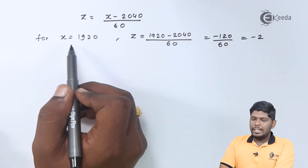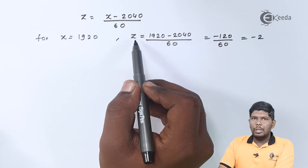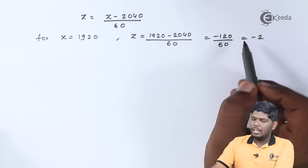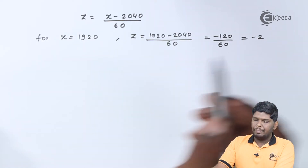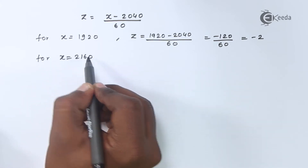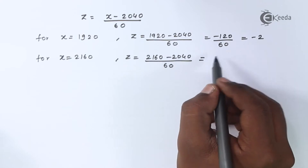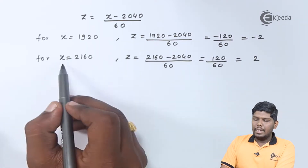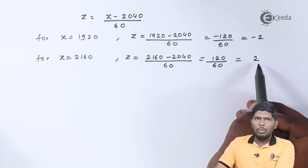If x = 1920 hours, the standardized value z = (1920 − 2040) / 60 = −120 / 60 = −2. Similarly, if x = 2160, the standardized value z = +2.